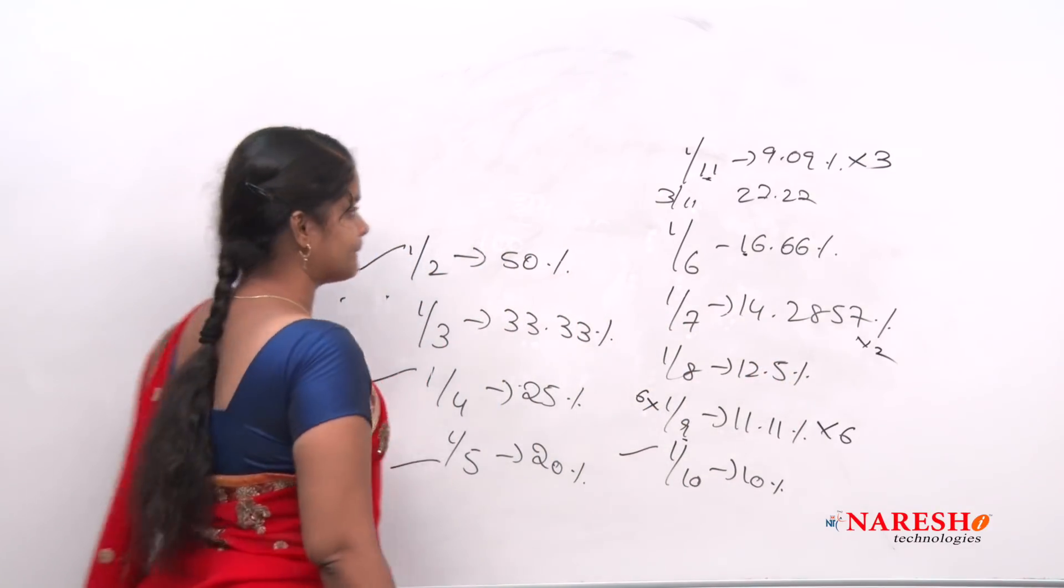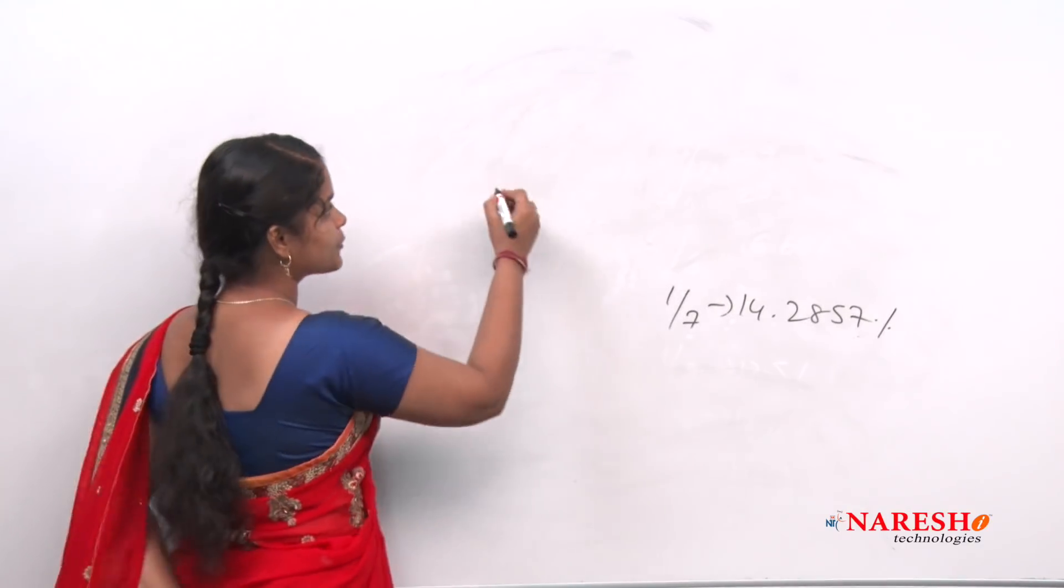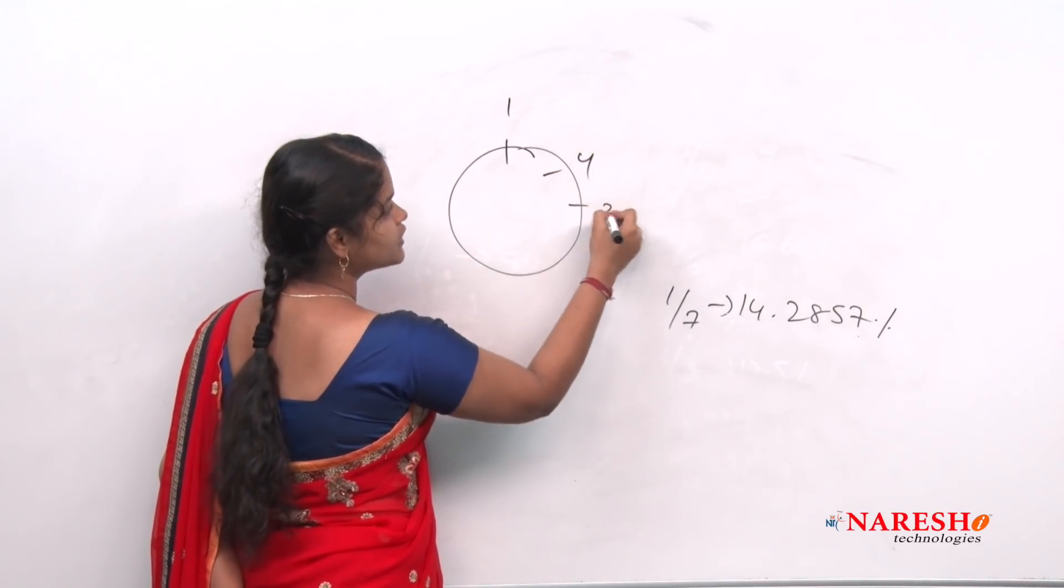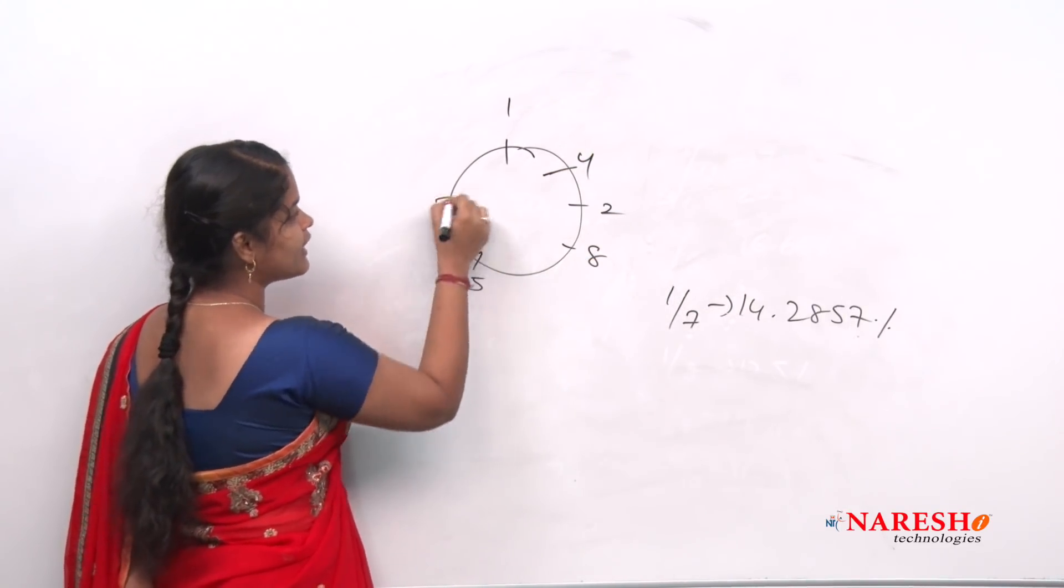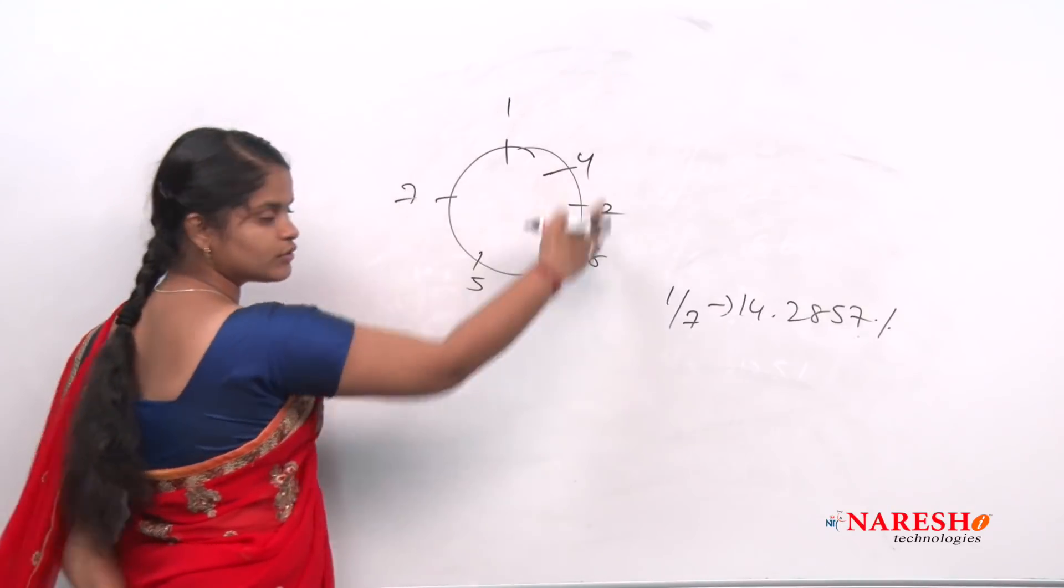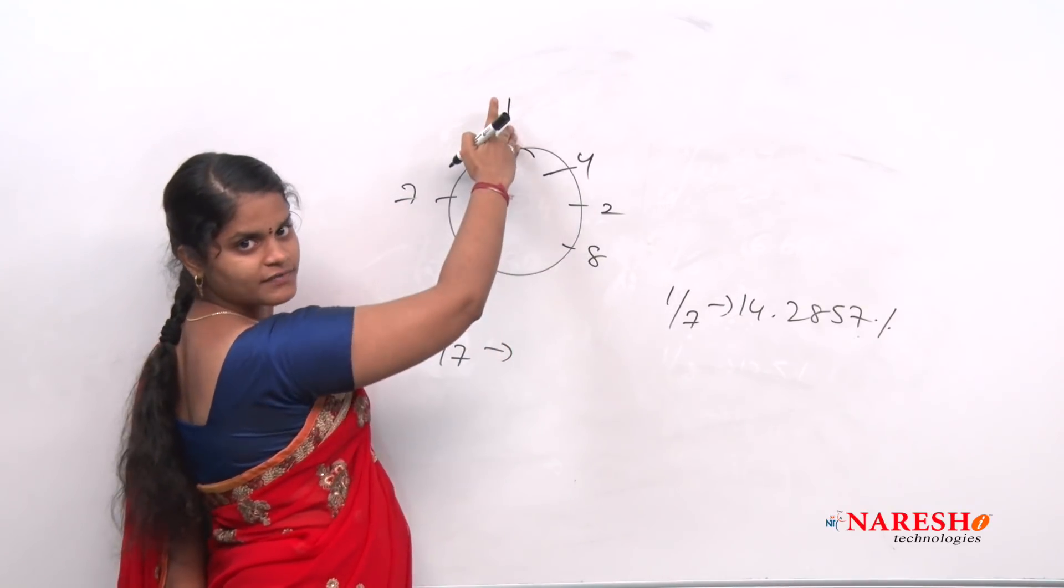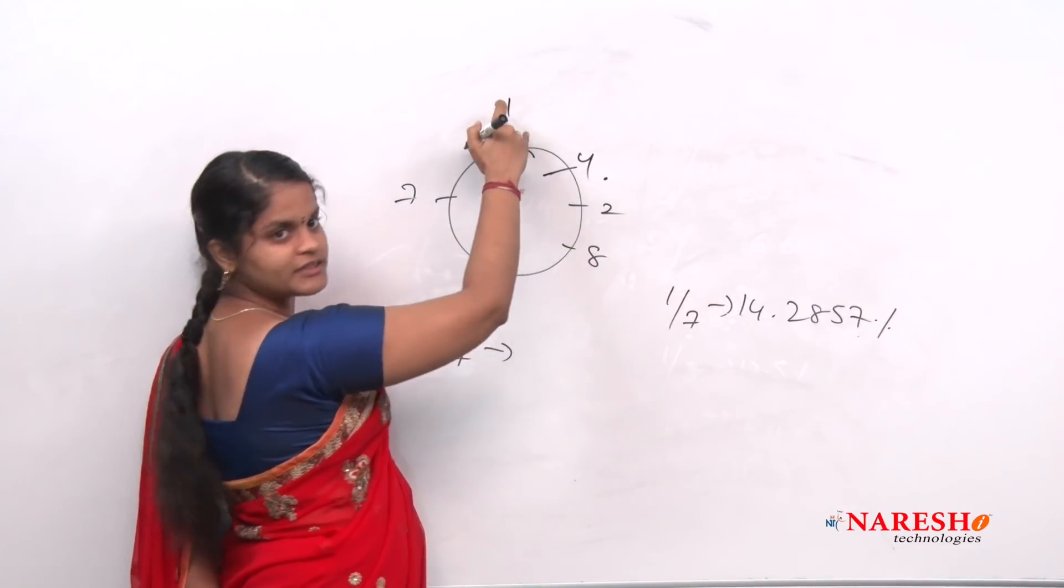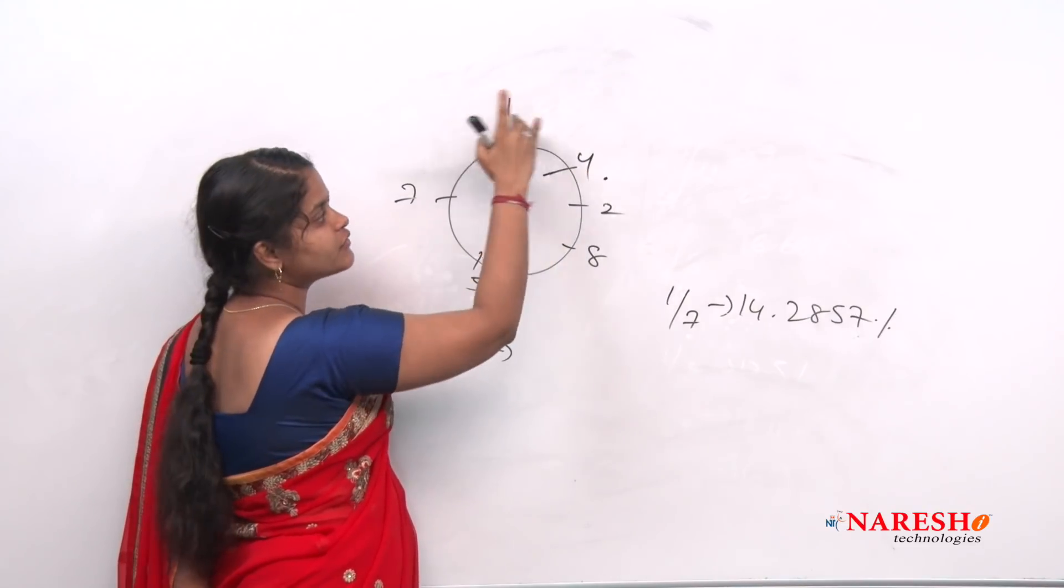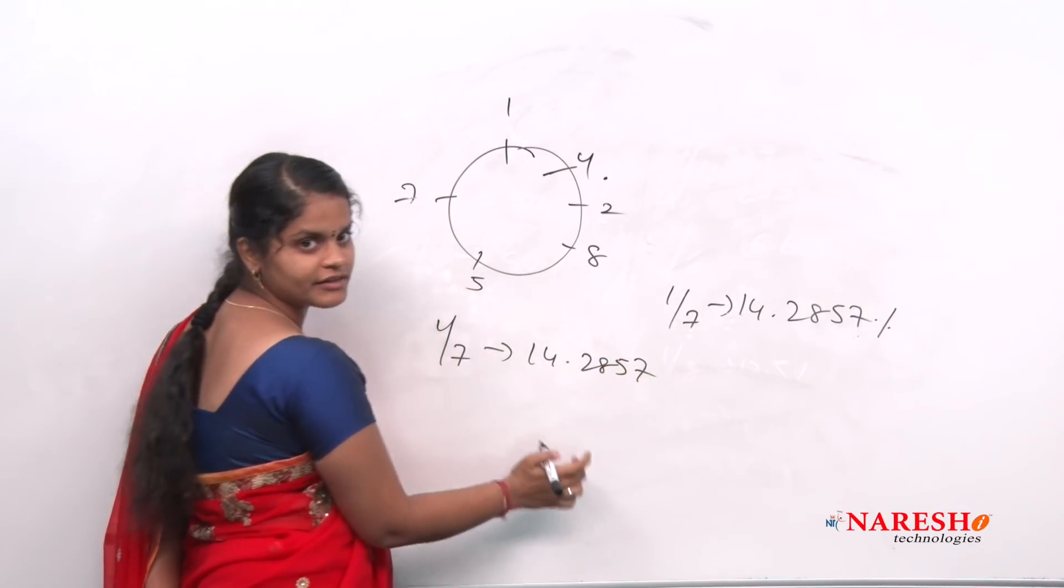1/7 is 14.2857. Just remember this value and draw a circle. Write all the values. See what is first? 1, 4, 2, 8, 5 and 7, right? Just remember this 1/7, 14.2857 and just write all the values in the form of circle. So if I want to find 1/7, what is the least number in all this? It is 1. So after 1 just leave 2 numbers. Means with 1, leave 2 numbers. Means leave 1 and next one 4, leave. Now place a point here. So it will be 14.2857.